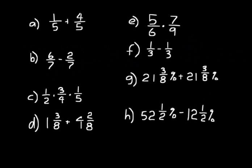Go ahead and pause and work all of the practice problems, then turn it back on and check your answers. On practice problem A, you add the numerators together: one and four is five over five. That's five-fifths, which equals one. When you have the same numerator and denominator, the answer is one.